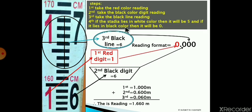If it lies in black color, then it will be zero. So this value is zero and in this way the reading becomes 1.660.